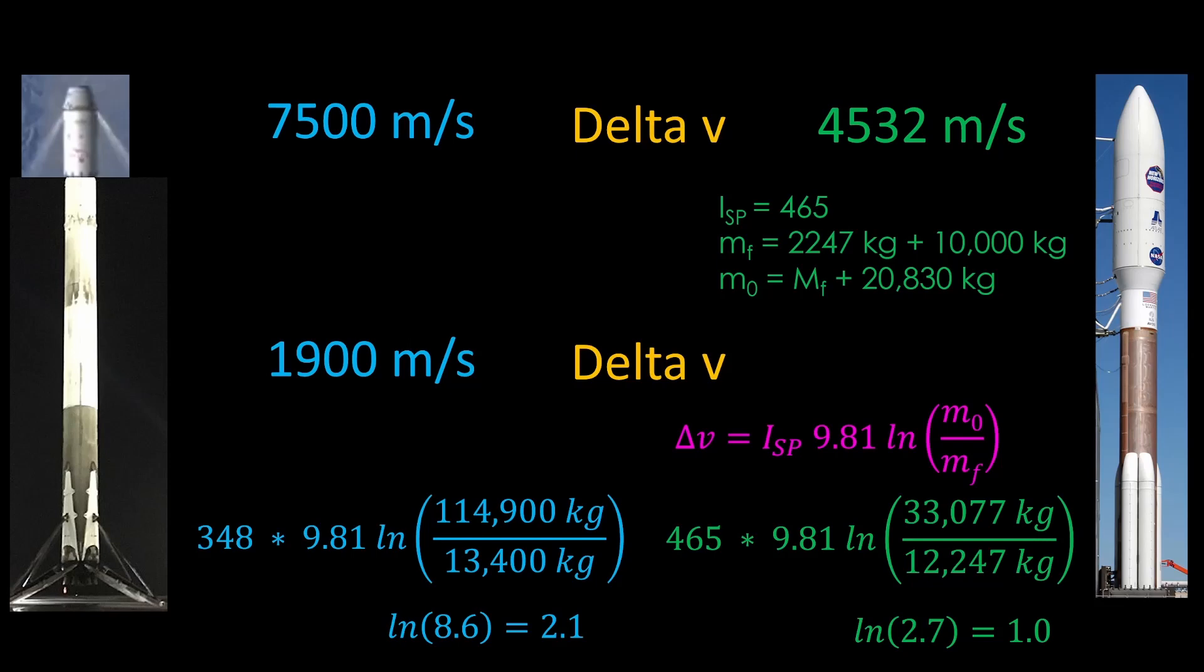The Centaur has a mass ratio of only 2.7, and the natural log of that is 1. The 25% specific impulse advantage of the RL-10 is overshadowed by the 210% advantage in mass ratio of the Falcon 9. The same factor that gives you high specific impulse, light exhaust particles, means that you can fit less propellant in a given tank and therefore end up with a worse mass ratio.